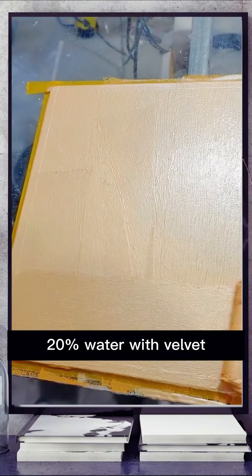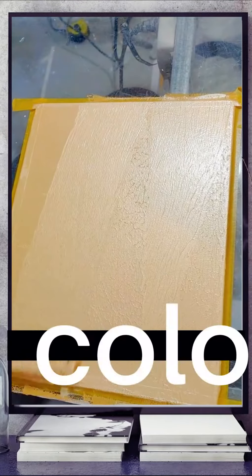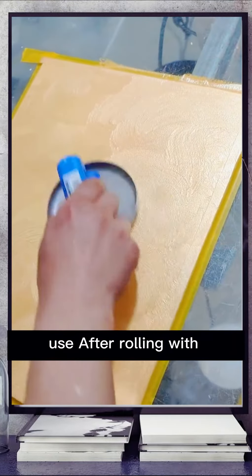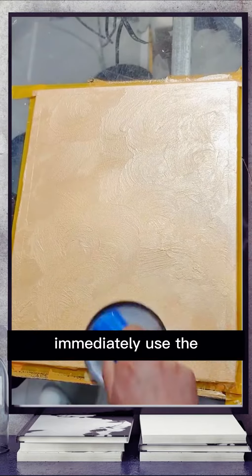Then add about 20% water with velvet and color according to the color card. After rolling with the roller brush, immediately use the circular sander to polish it evenly with the number 8 method.